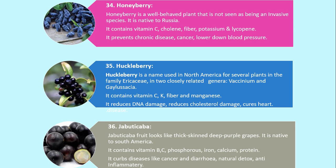Number 36. Jabuticaba. Jabuticaba fruit looks like thick-skin deep purple grapes. It is native to South America. It contains vitamin B, C, phosphorus, iron, calcium and protein. It curbs diseases like cancer and diarrhea, acts as a natural detox, and is anti-inflammatory.